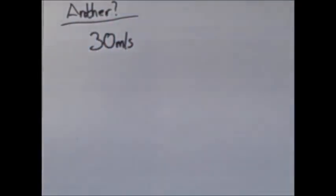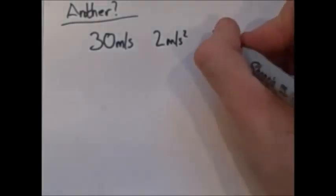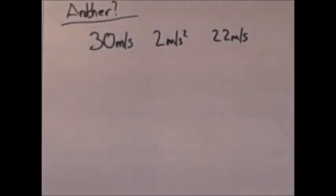Okay, let's try another, a harder one. A car is going at 30 meters per second and is decelerating at 2 meters per second as it heads towards town. When it reaches town, it is travelling at 22 meters per second. How far away is the town?